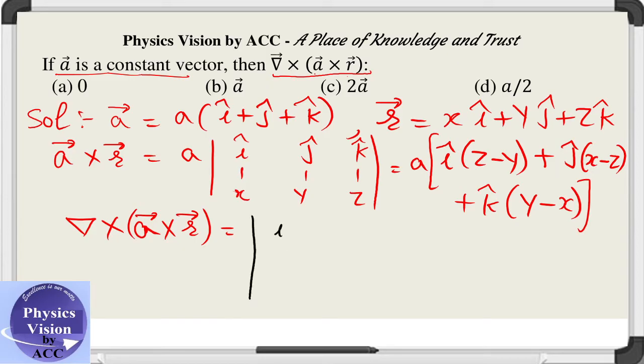We will be getting i cap, j cap, k cap, and here we can write curl by curl x, curl by curl y, curl by curl z. In the denominator we will be writing a outside the bracket, and then z minus y, x minus z, and y minus x.